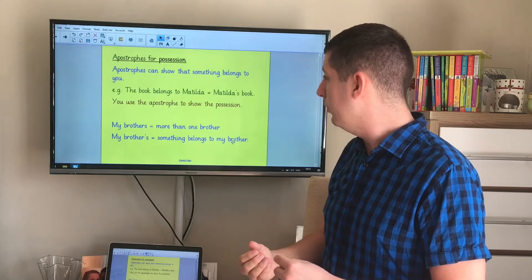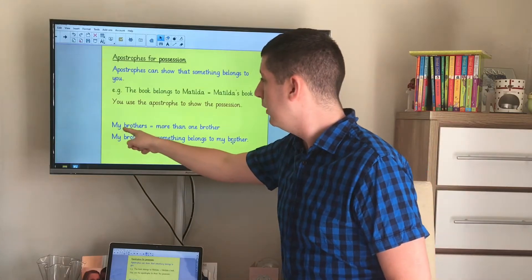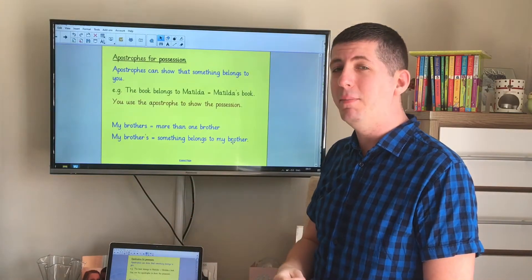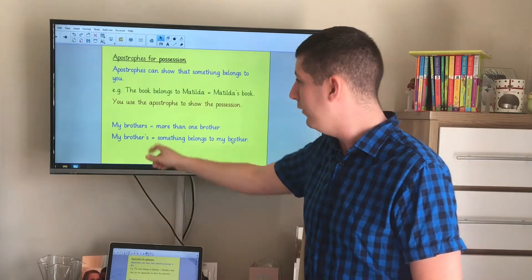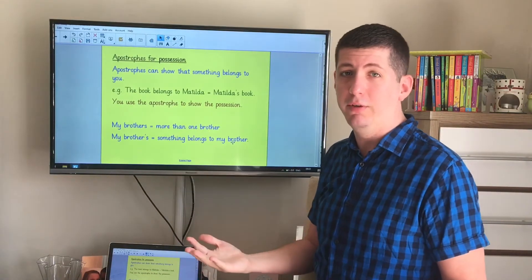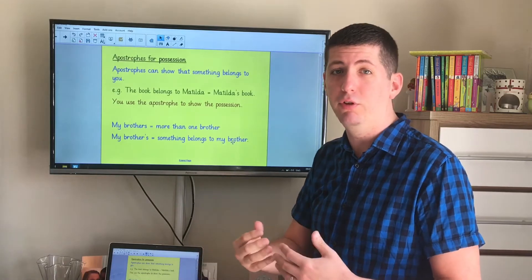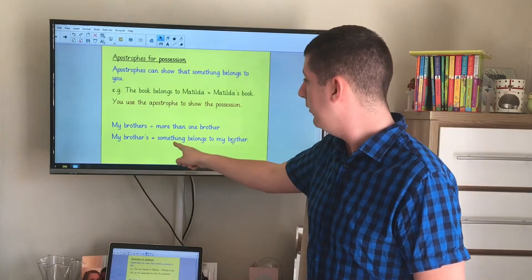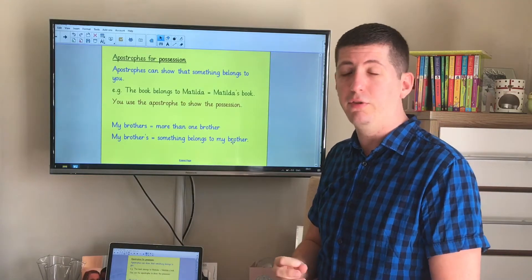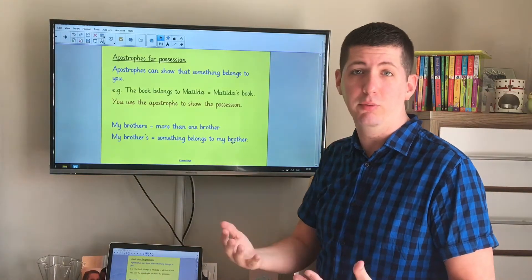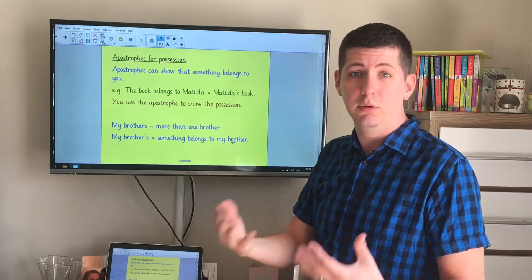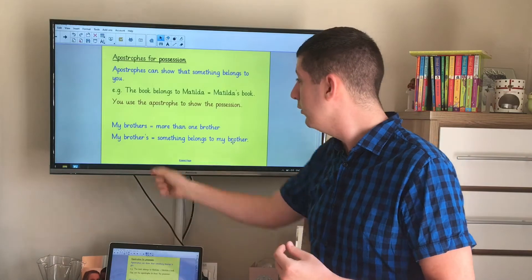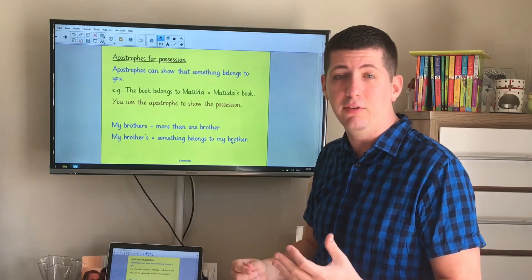There are two sentences down the bottom here. My brothers. They're both the same apart from that apostrophe. Now the first one, my brothers, means you've got more than one brother. It's a plural. Brothers is more than one. My brother's means that something belongs to my brother. It would be apostrophe S for brother's because it belongs to my brother. So putting that apostrophe there changes the meaning of the sentence completely.